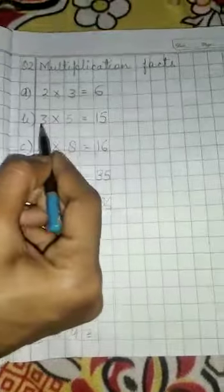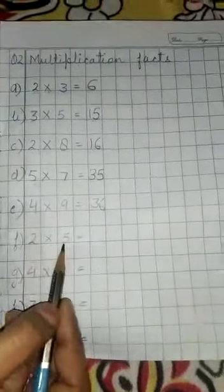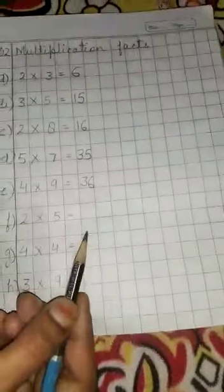Two, threes are. Three, fives are. Two, eights are. Five, sevens are. Nine, four, nines are. Okay. Two, fives are. Ten you will write yourself.